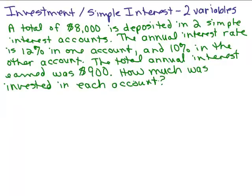We're going to solve this investment simple interest problem using two variables. I also have a video where I solved it using one variable, the same exact problem. So this will be using a system of equations. A total of $8,000 is deposited in two simple interest accounts. The annual interest rate is 12% in one account and 10% in the other account. The total annual interest earned was $900. How much was invested in each account?